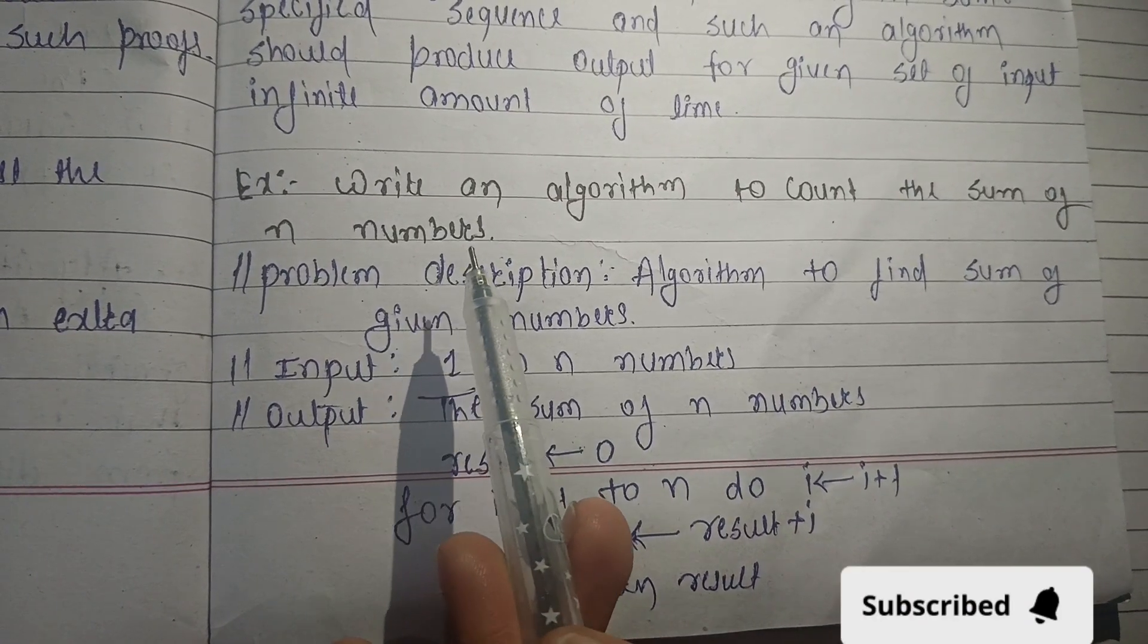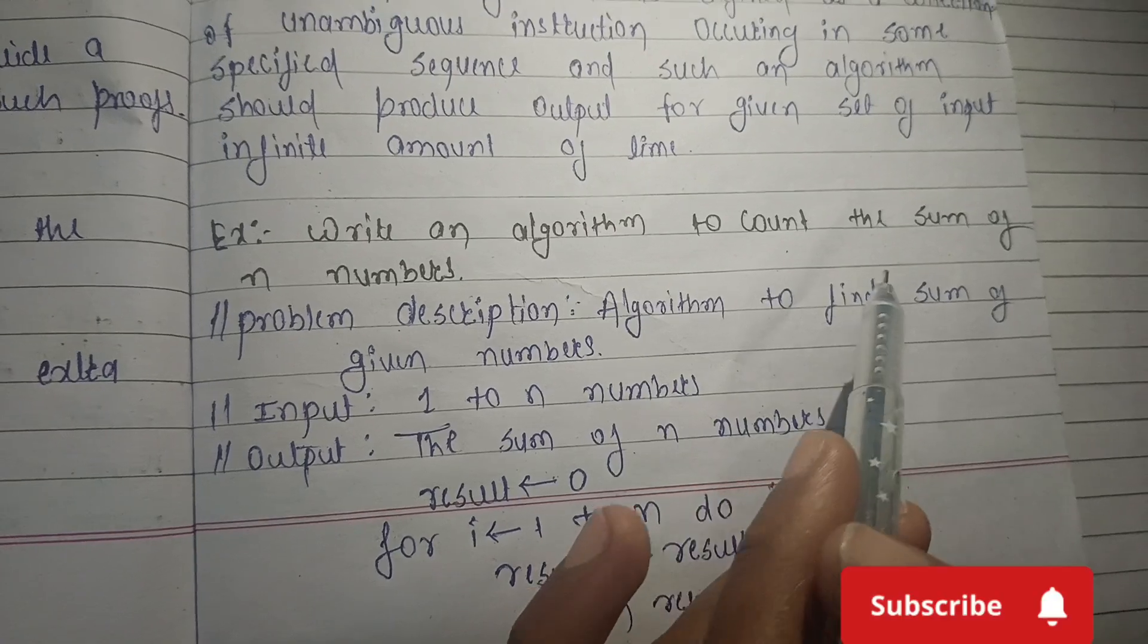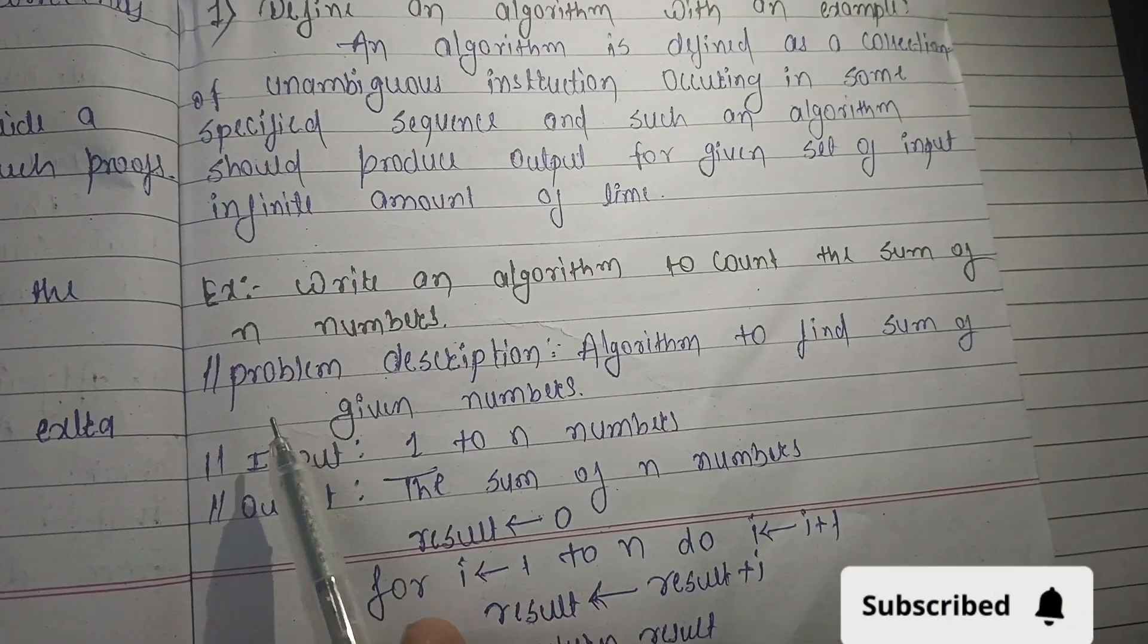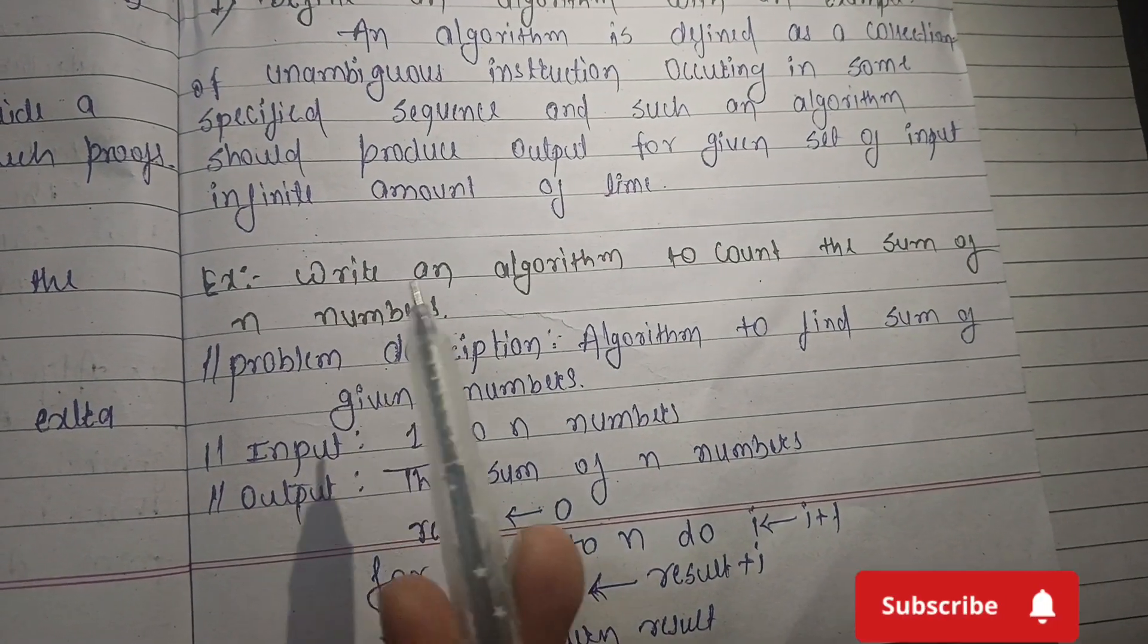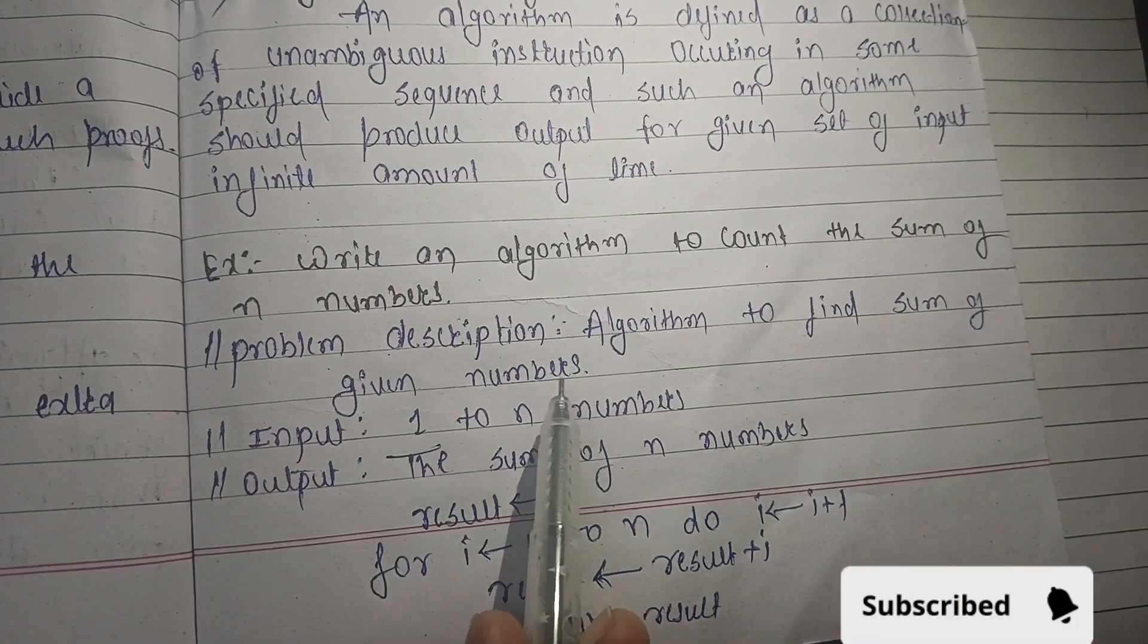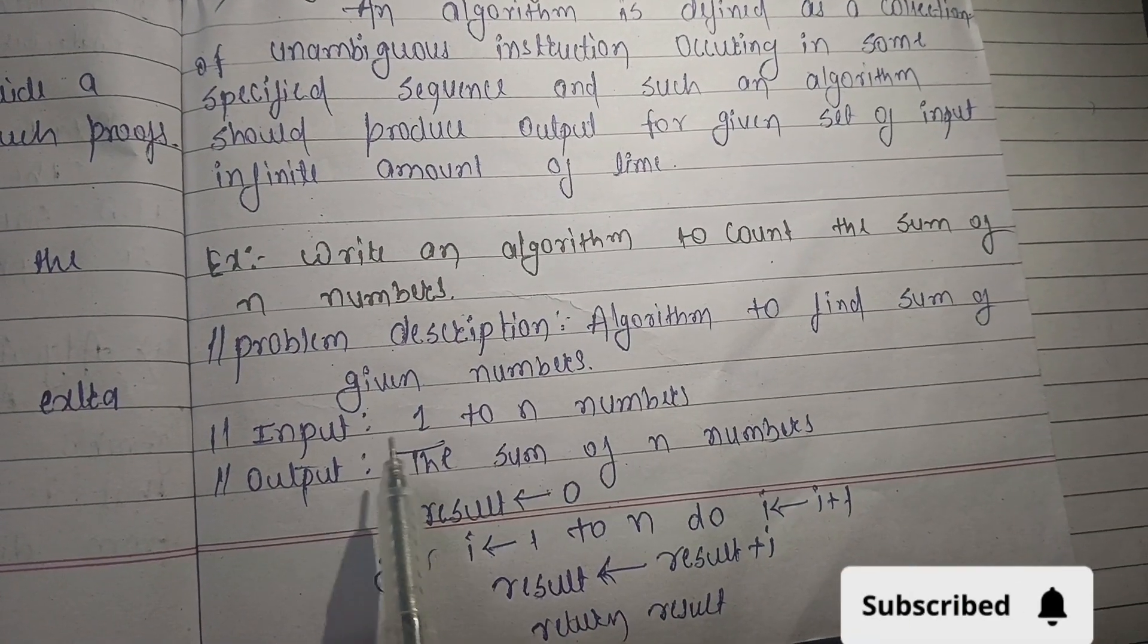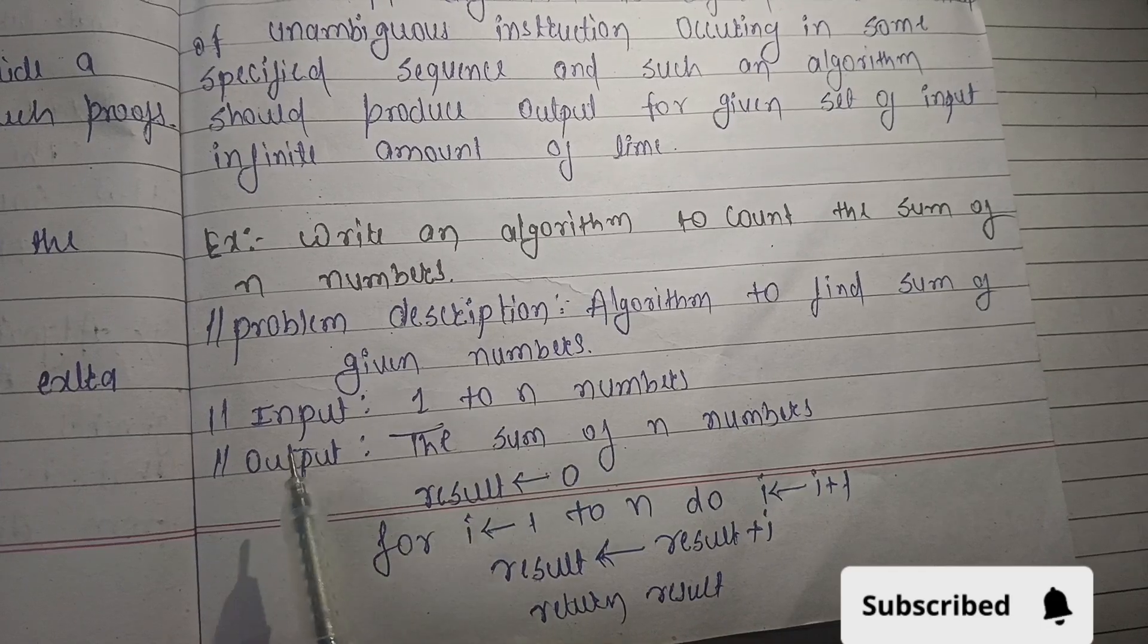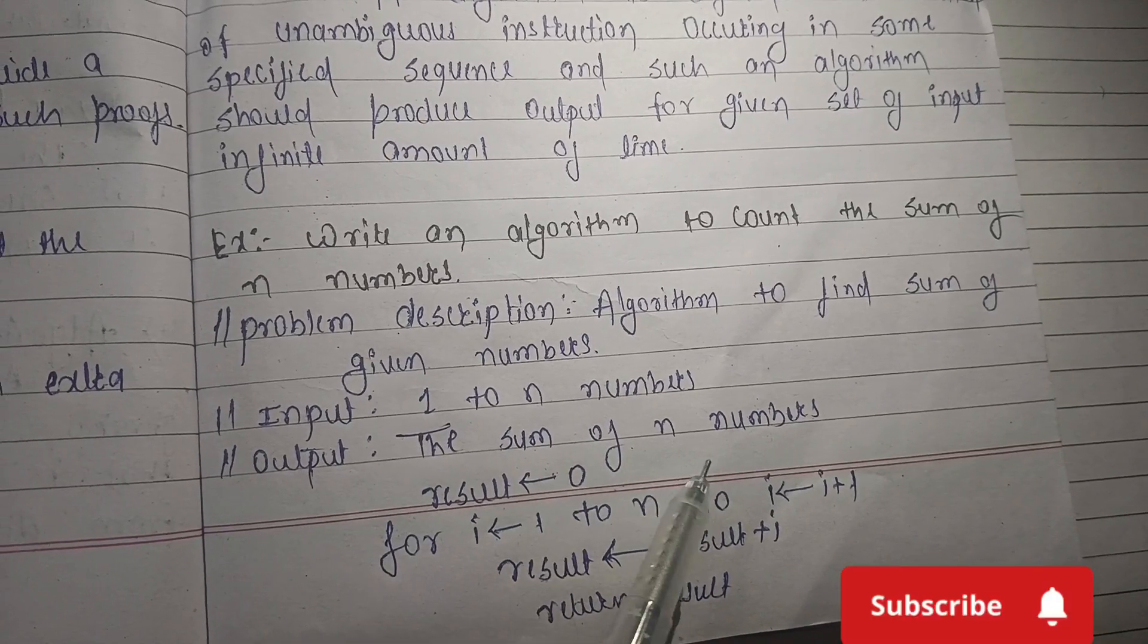Example: Algorithm to count the sum of n numbers. Problem description: Algorithm to find sum of given numbers. Input: 1 to n numbers. Output: the sum of n numbers.